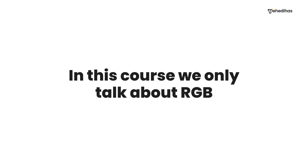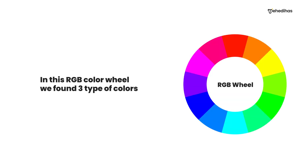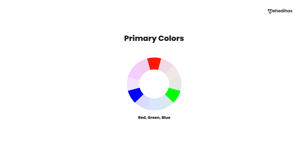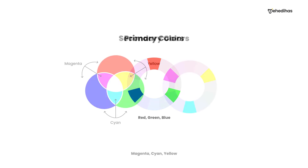On this screen, we will see the RGB color wheel. Now we will look at primary colors. Primary colors are three: red, green, and blue — this is RGB. And then we have secondary colors.